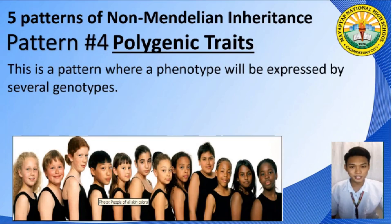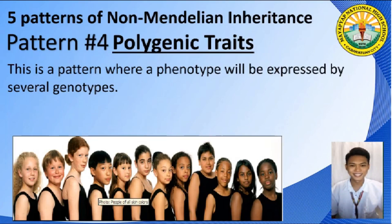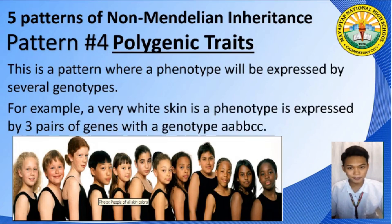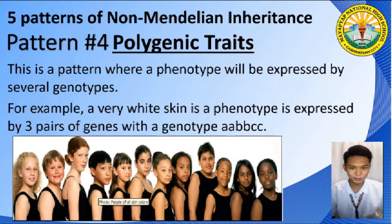Let us have the picture shown on your screen as an example. That picture shows the different kinds of skin colors. Can you find your skin color in that picture? A very white skin is a phenotype, and it is not only expressed by a single pair of genes — it is expressed by three different pairs of genes. Can you name those genes? That is Polygenic Traits.